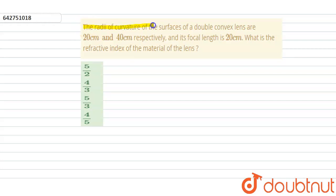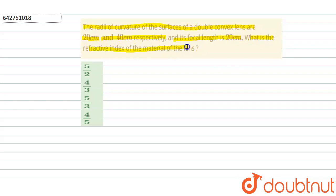Hello students. Our question is: the radii of curvature of the surfaces of a double convex lens are 20 centimeters and 40 centimeters respectively, and its focal length is 20 centimeters. What is the refractive index of the material of the lens?